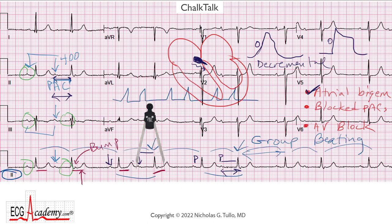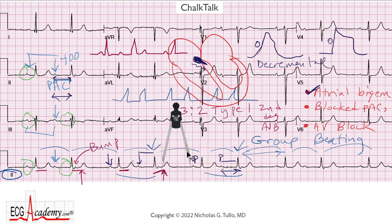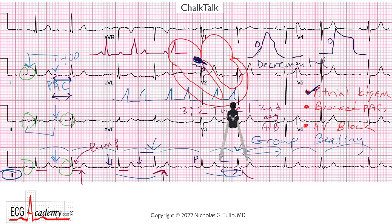Moving the calipers again, we're looking for three-to-two Wenckebach — that would be a very common cause of group beating, where you'd have a short PR, then a longer PR, and then the third P wave occurs on time but blocks, and then the PR gets shorter again. That's your typical 3:2 Wenckebach. But the P-to-P interval here is not regular — that's very unusual. So this is not just normal sinus rhythm marching through with 3:2 Wenckebach. The next P wave is timed when expected, the following P wave is regular, but the third P wave seems to come early. This bump at the end of the QRS complex has to be a P wave — it's absent in the others and is not part of the QRS — but the P-to-P interval is not regular.